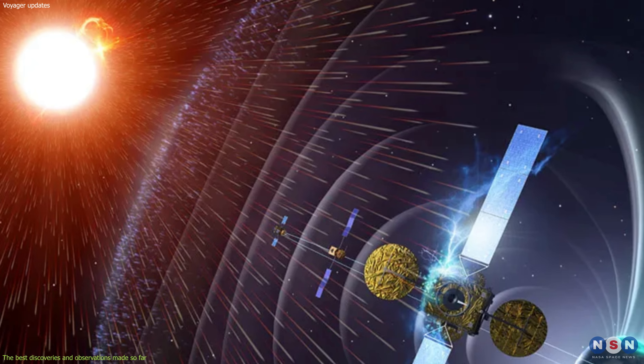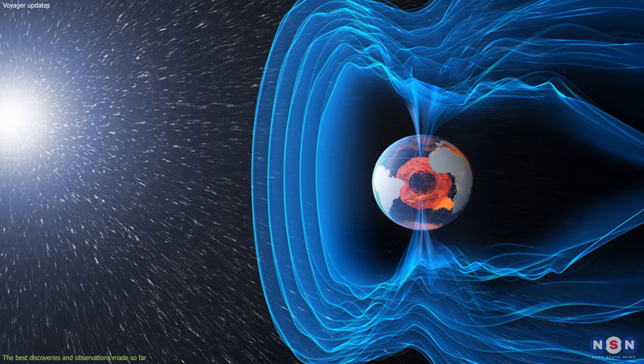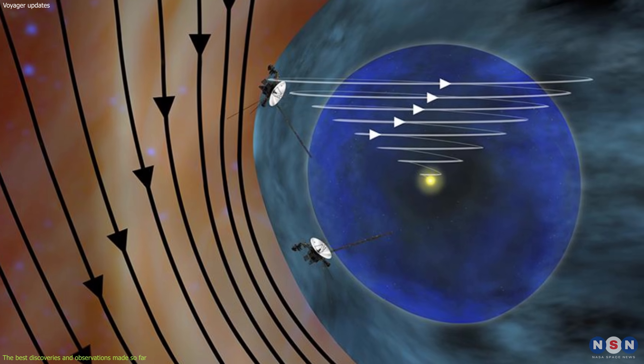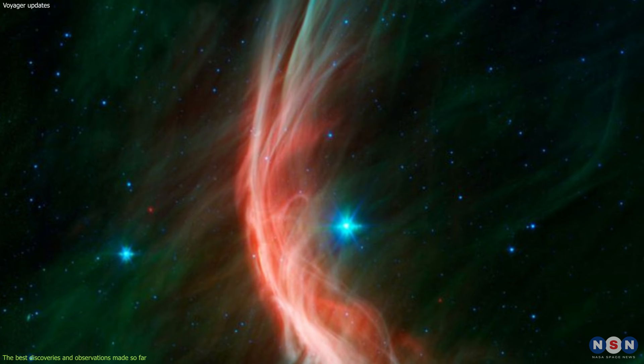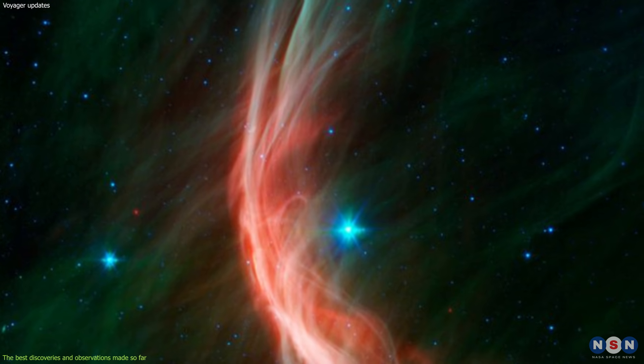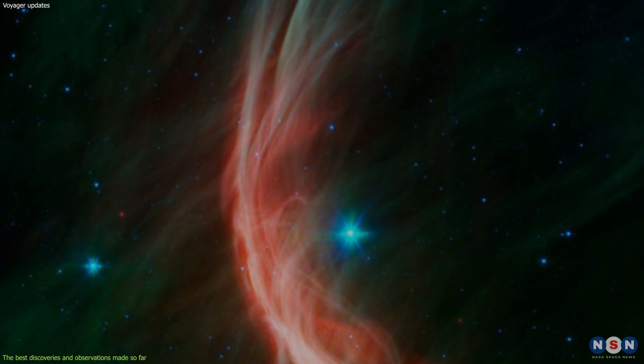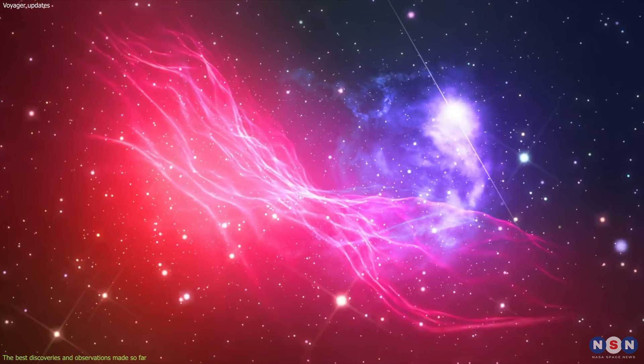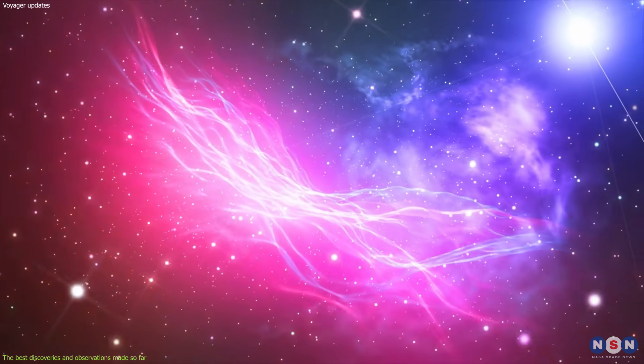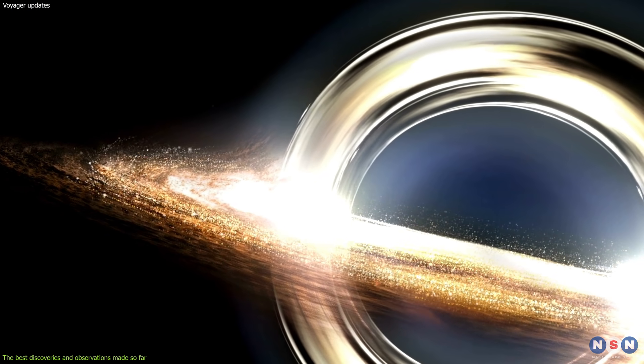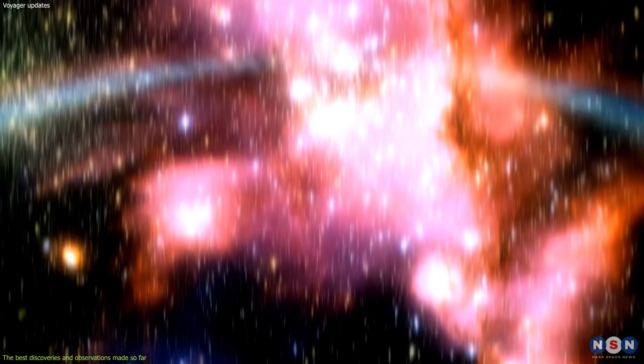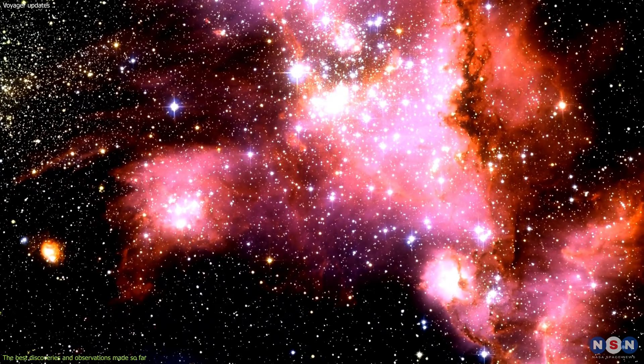They detected cosmic rays, plasma waves, and magnetic fields in the interstellar medium. These detections show that the interstellar space is not empty or uniform. It is filled with particles and energy that come from different sources such as stars, supernovas, and black holes. It is also affected by shocks and turbulence that create waves and fluctuations.